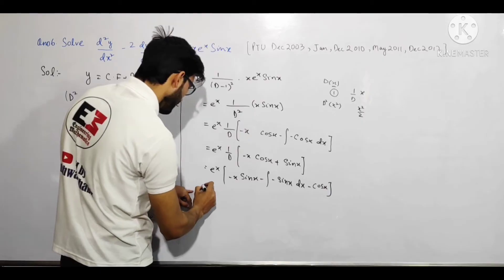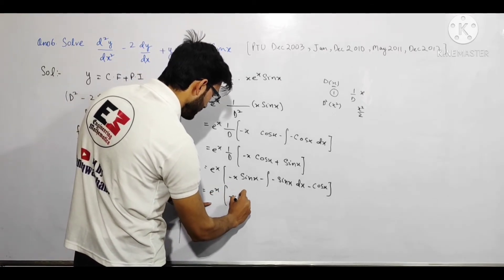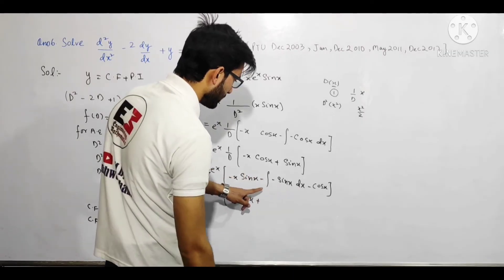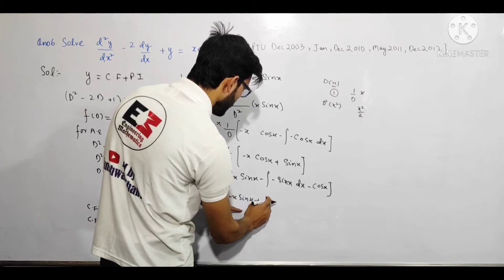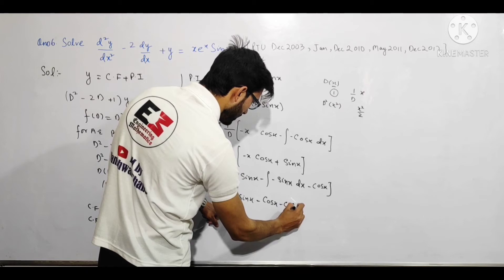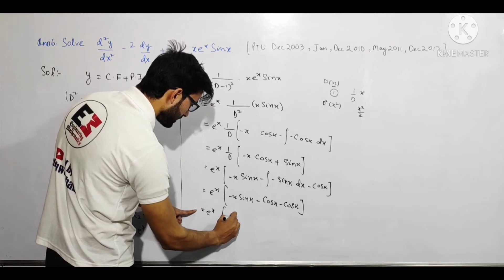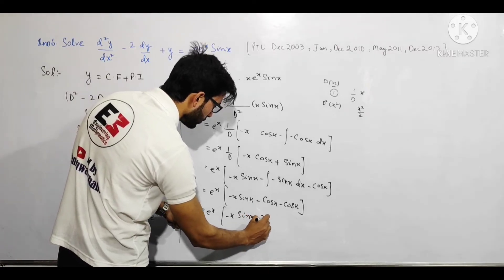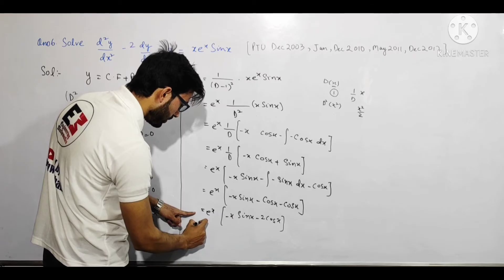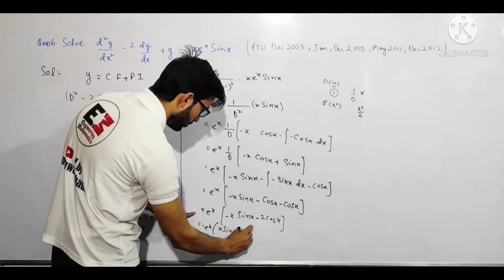Doosri integration ke baad expression ban jata hai: eˣ × [-x sin x + cos x + (-cos x)] — wait, minus minus plus ho jata hai. Sin x ka integration karte hain: -cos x, aur is minus ke saath minus bhi hai toh plus cos x aata hai. Aur pehle se bhi cos x hai. Toh final mein bacha: eˣ × (-x sin x - 2cos x), ya -eˣ(x sin x + 2cos x).